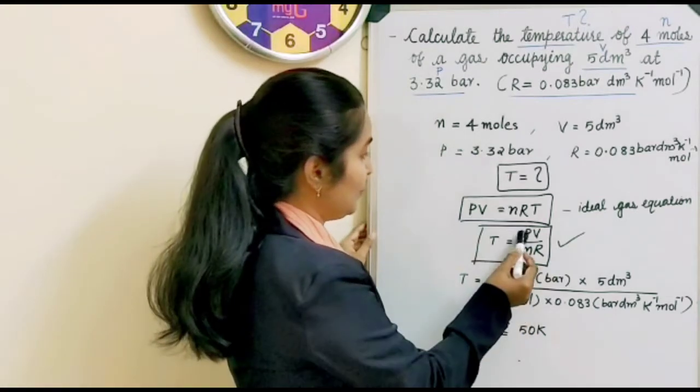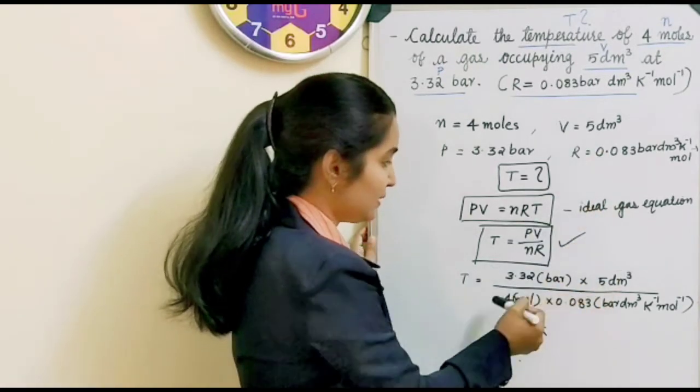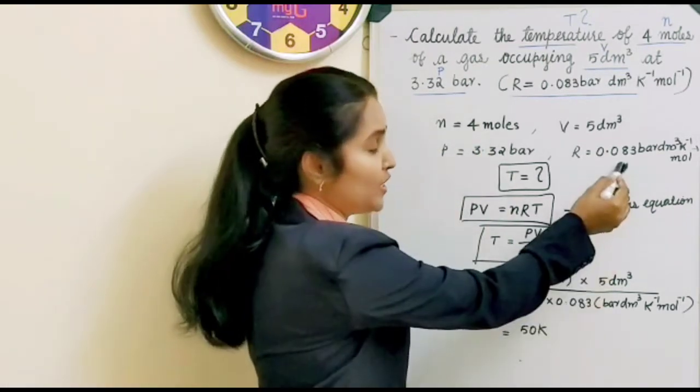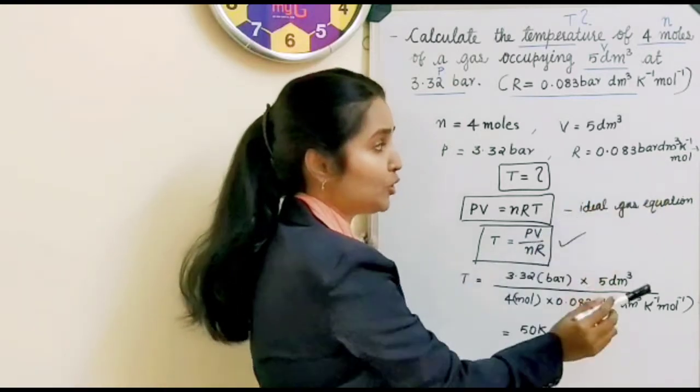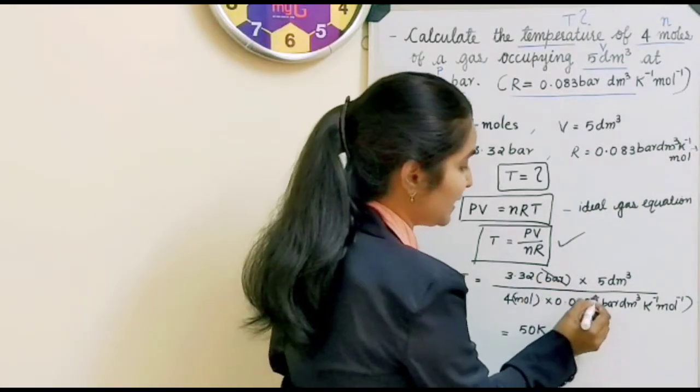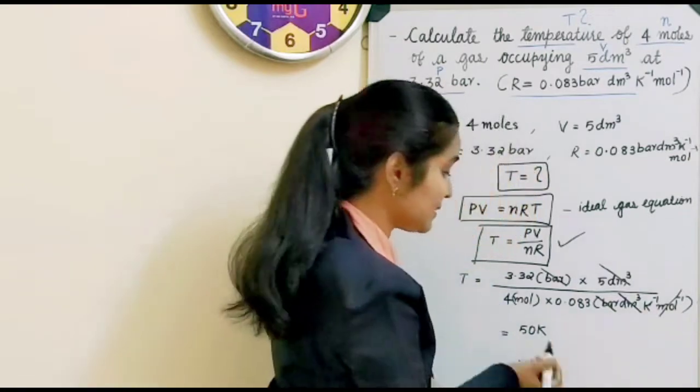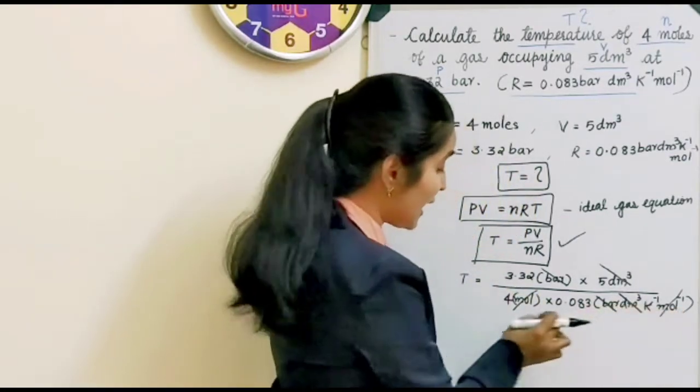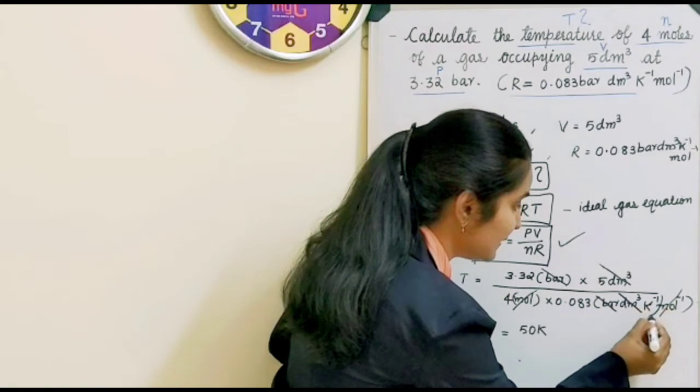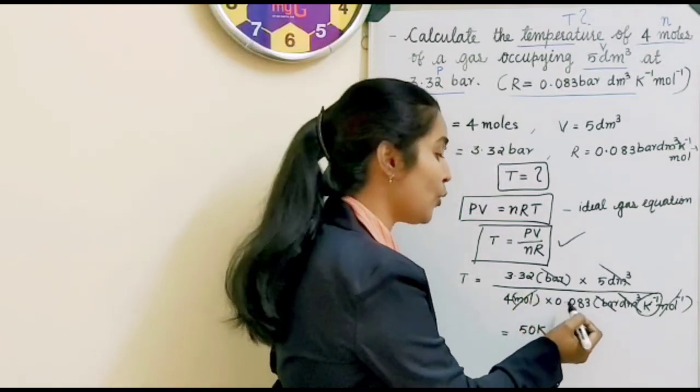Here we have pressure 3.32 bar into volume 5 dm³ divided by number of moles 4 moles, and then R gas constant 0.083 bar dm³ kelvin⁻¹ mole⁻¹. And then these units. Here we have one bar and here we have one bar. Here we have one dm³ and here we have one dm³. Here we have mole⁻¹ and here we have mole. Negative mole and positive mole canceled. And then what else we have. We have one K⁻¹ here. Here we have one K⁻¹.